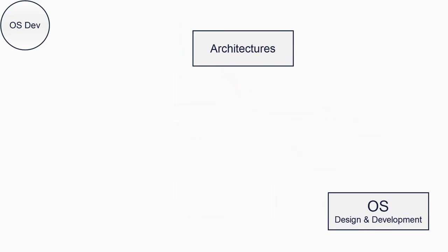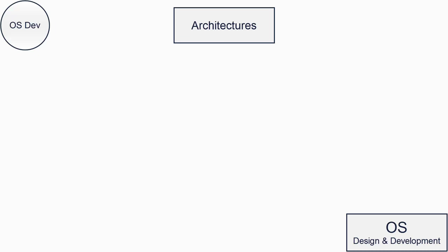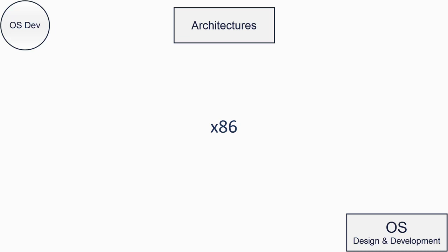I mentioned the word architecture earlier, so let's go back to that for a minute. An architecture is a specific processor design. There are various more specific definitions, but for basic understanding this will do. So when we talk about target architectures, what we really mean is which processors is our operating system designed to run on. In this series, we will be targeting any x86, 32 or 64-bit processor.